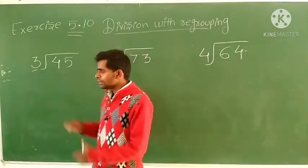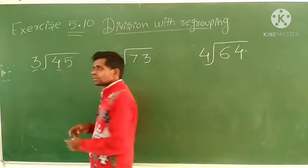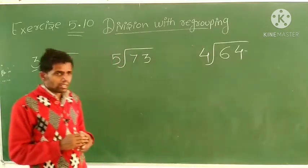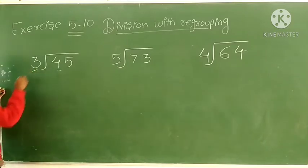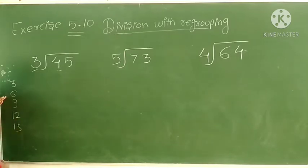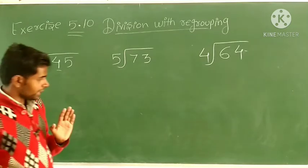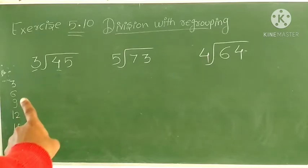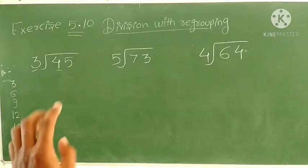Here the divisor is 3 and we start with 4. We need to recall the multiplication table of 3 up to 4: 3 ones are 3, 3 twos are 6, 3 threes are 9, 3 fours are 12, 3 fives are 15.